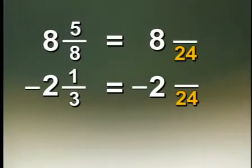And that first problem, of course, is 8 and 5 eighths minus 2 and 1 third. And you'll notice that we've already set it up. We have the common denominator of 24.